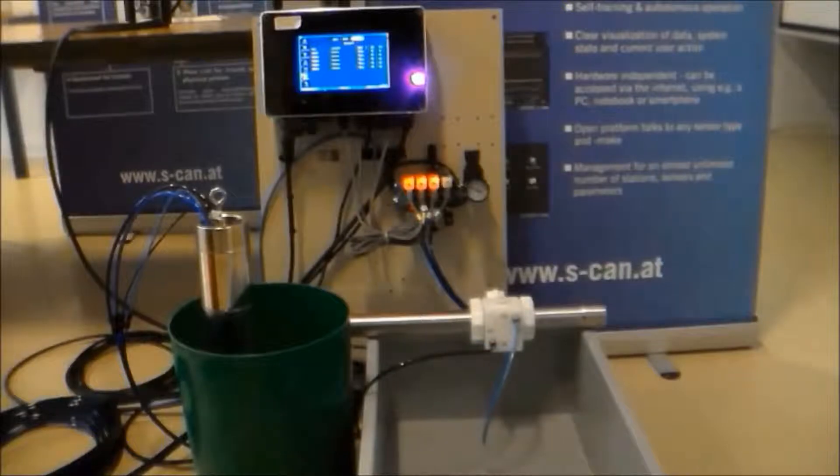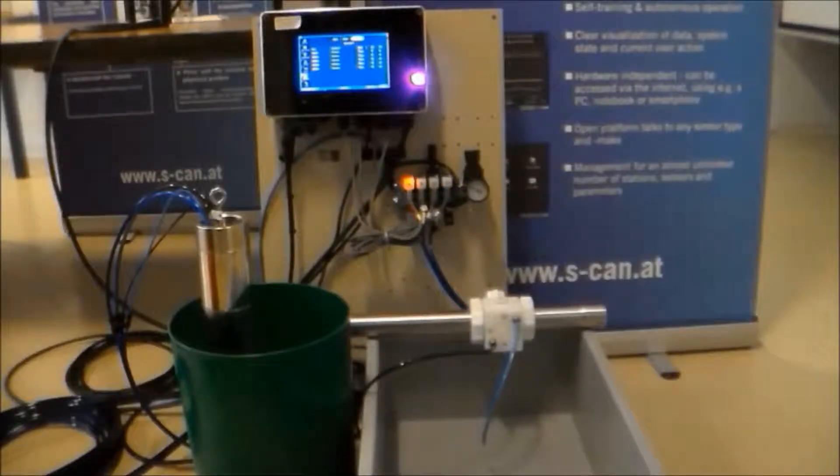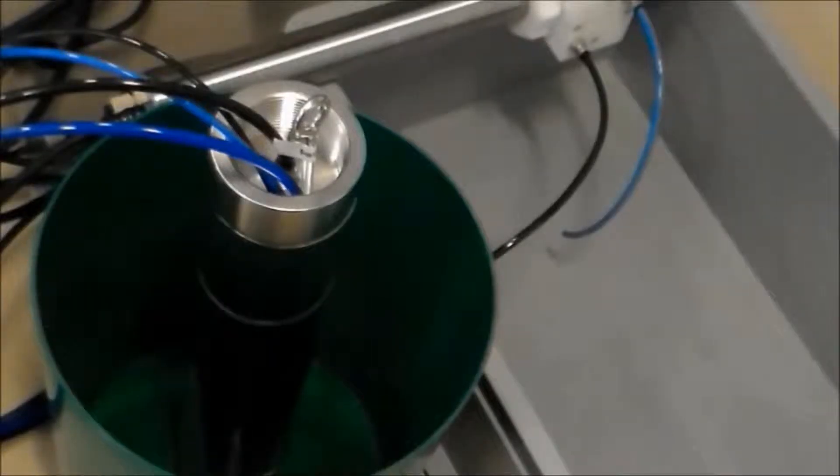In the first step, a valve opens, a vacuum is generated and water from the green bucket is sucked into the pump. Then, further valves are switched and the water gets pushed through the pipework and delivered to the flow cell of the spectralizer.